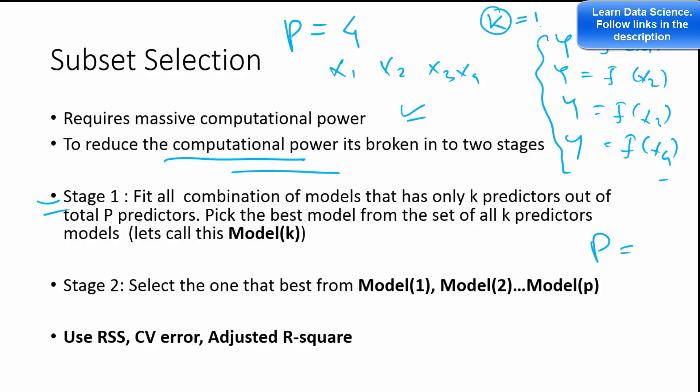When k equals 2, you have Y is a function of X1 and X2, and then in the second model Y is a function of X1 and X3, and then X1 and X4, and then X2 and X3, and then X3 and X4. So then you will select the best out of these five models.